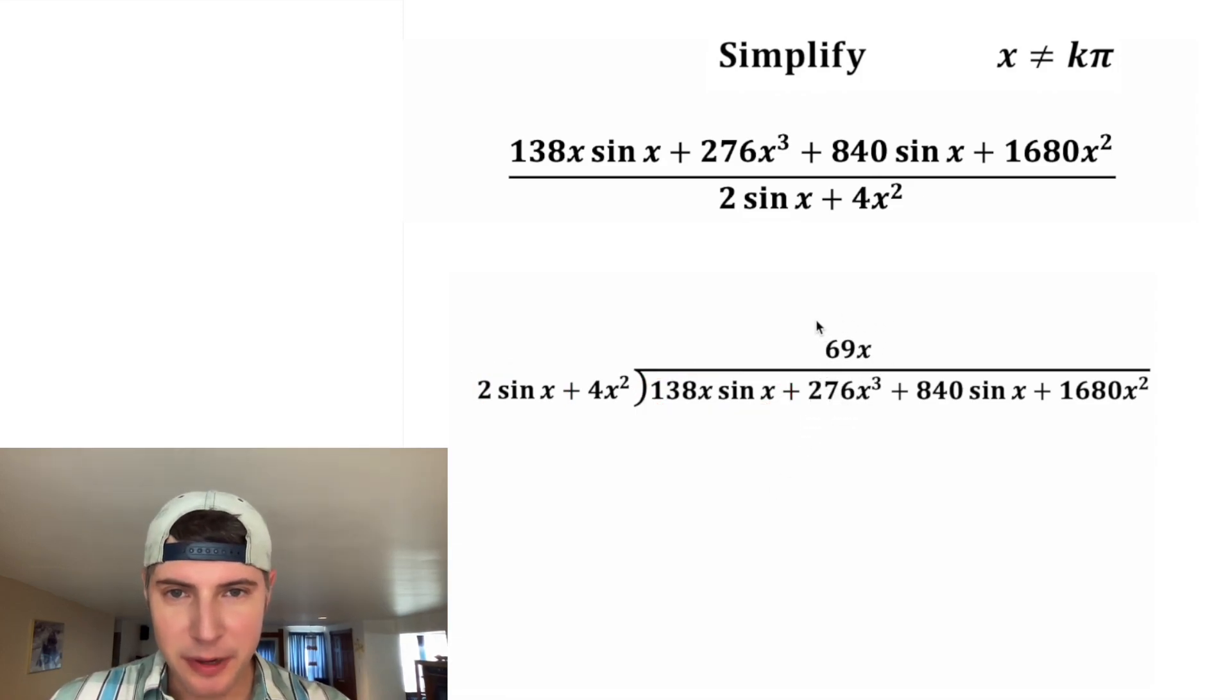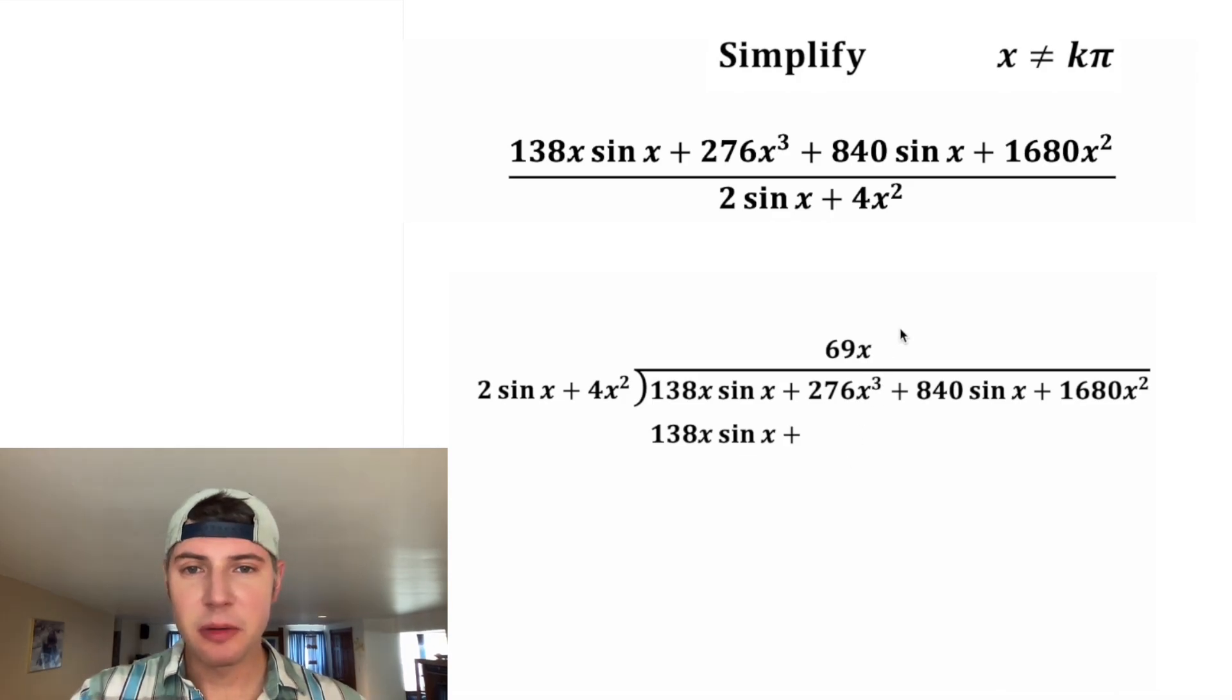So now we're going to multiply. We're going to multiply this 69x times the 2 sine x. 69 times 2 will give us 138. x times no other x's will give us x. And then sine x times no other sine will give us sine x. Plus, and then we're going to multiply this times this. 69 times 4 is 276. And x times x squared is x cubed.